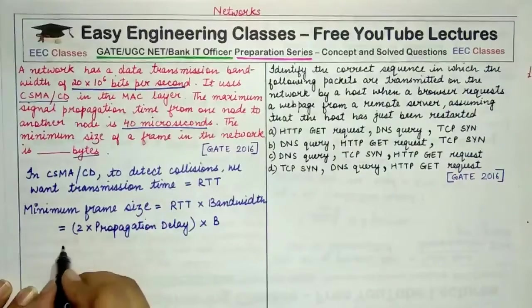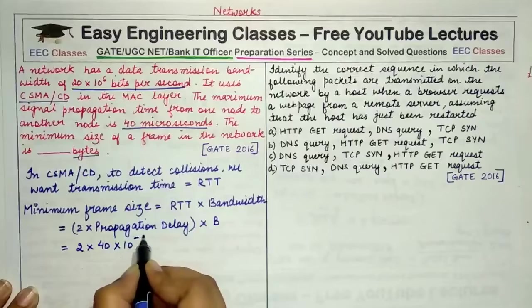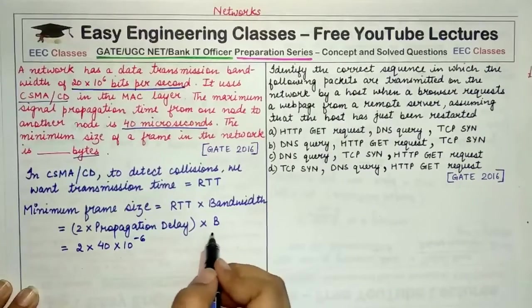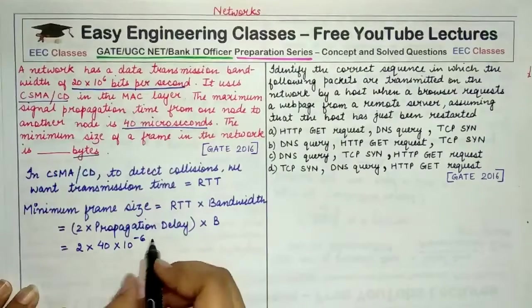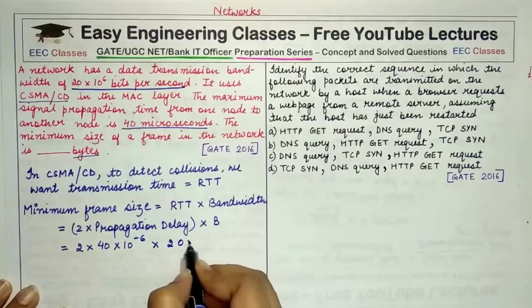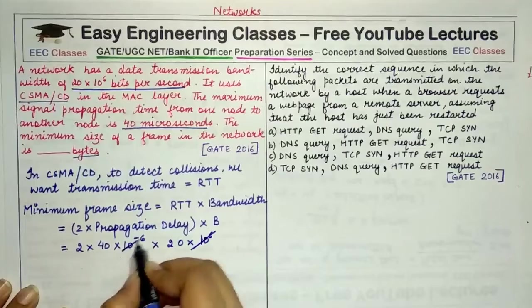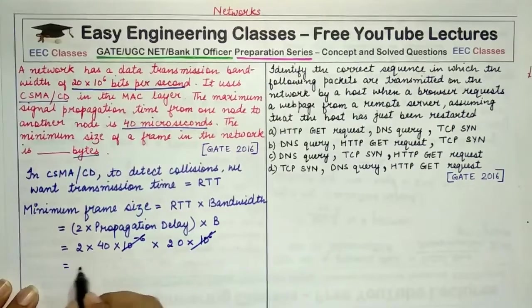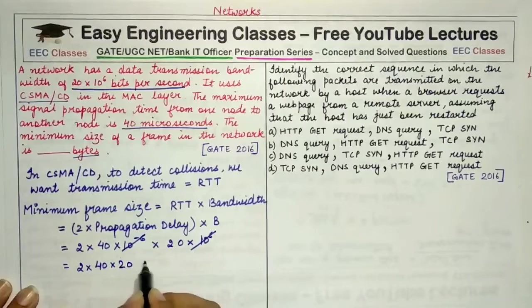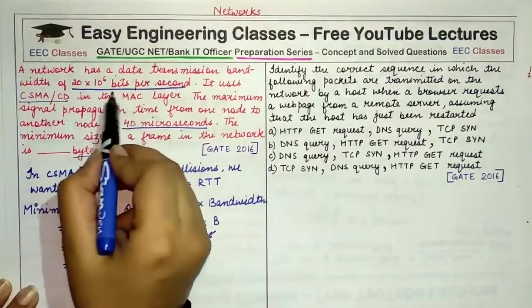So I can write it as twice the propagation delay into the bandwidth, which I am writing as B here. It is given that the maximum signal propagation time is 40 microseconds, so 2×40×10^-6 to convert it into seconds, because the bandwidth is given to you in seconds, multiplied by the bandwidth which is equal to 20×10^6.